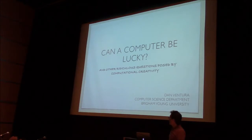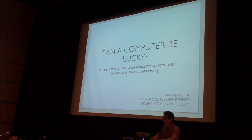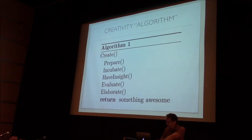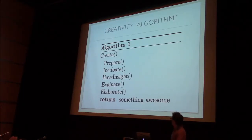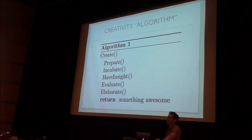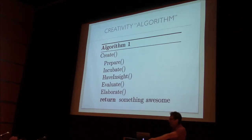One way to do this is to look at humans and try to compare with how humans do it, or take that as an inspiration. I'm going to use this algorithm as a surrogate for the algorithm for creativity. This is taken from Csikszentmihalyi's book on creativity, and it is very similar to what a lot of people would suggest is what people do when they are being creative.